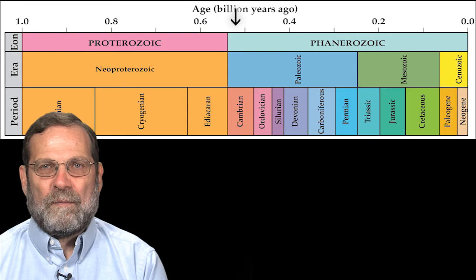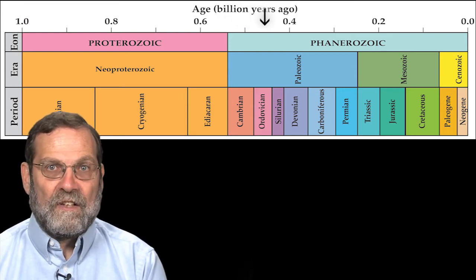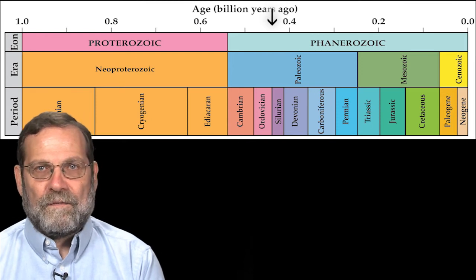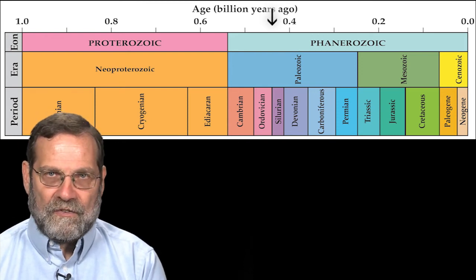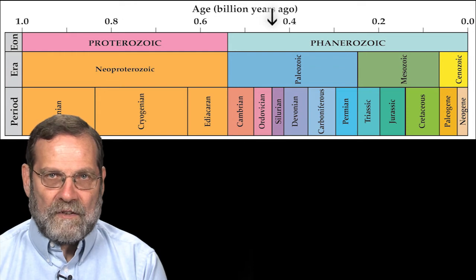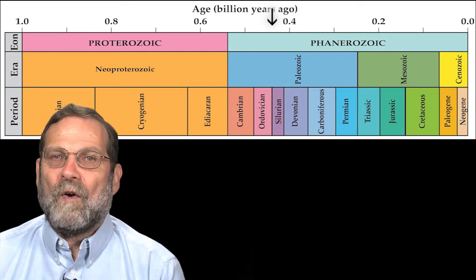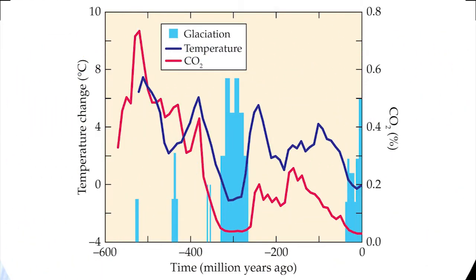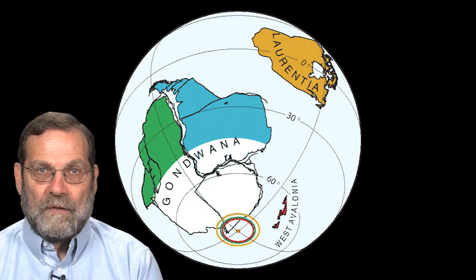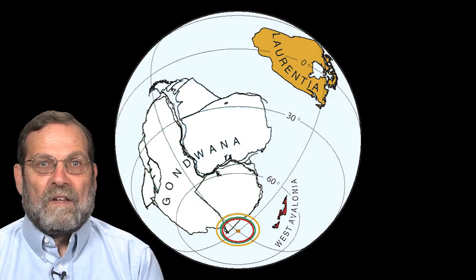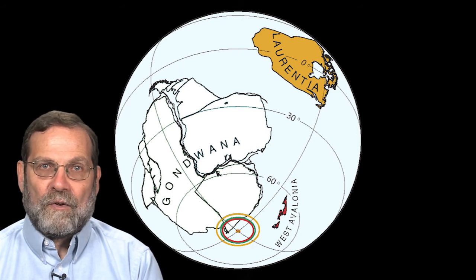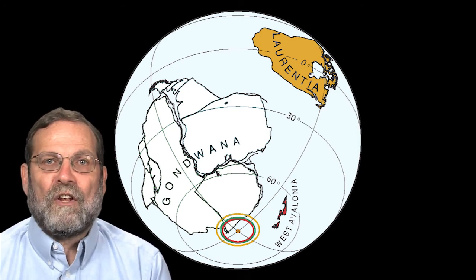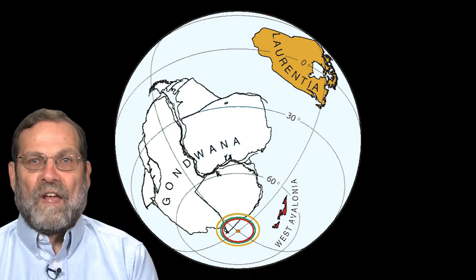A devastating mass extinction named the Ordovician-Silurian extinction occurred about 440 million years ago. All major life forms were affected, and approximately 85% of all species previously found in the fossil record disappeared. The primary cause appears to be a brief glacial interval. Ice began to accumulate on the polar areas of one large continent named Gondwana, initiating falling sea levels on the order of 50 to 100 meters. This drained the shallow seas that extended into the interior of land masses, resulting in a harsh climate at low and mid-latitudes.